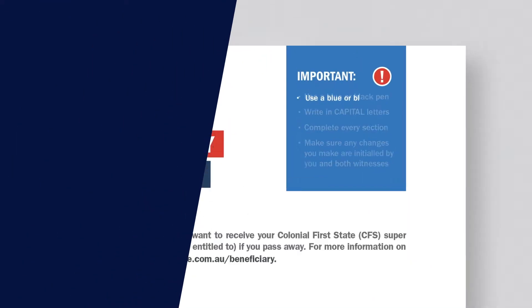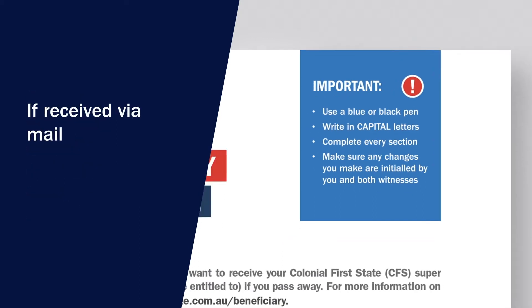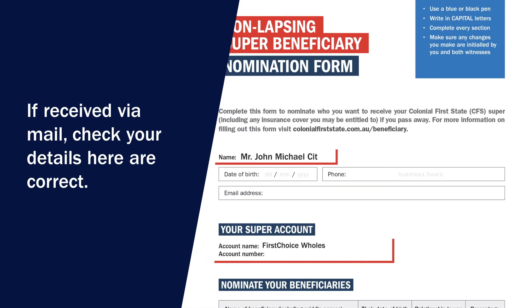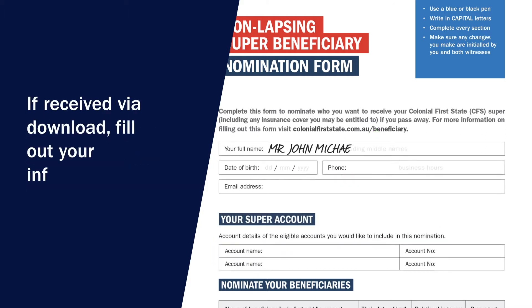There is a checklist in the top right corner which explains what you need to do to complete the form correctly. If we sent you the form in the mail, your title, full name and accounts have already been filled in — please check these details are correct. If you've downloaded the form from our website, you will need to fill this information out yourself.